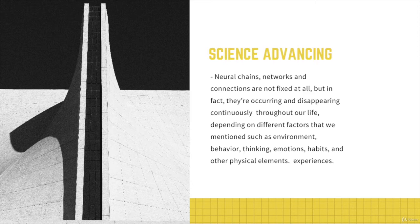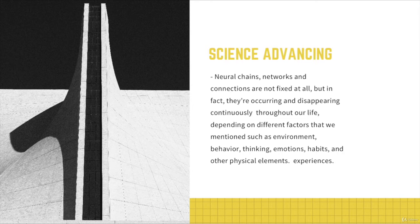As science advanced, researchers discovered that neural chains, networks, and connections are not fixed at all — which was against the conception back then. In fact, they are occurring and disappearing continuously throughout our lives. Be really careful: we say throughout our entire life, not just throughout childhood or adulthood, depending on different factors such as environment all the way down to physical elements and experiences.